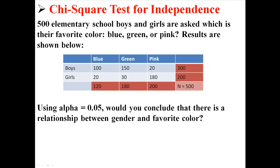So take this example. 500 elementary school boys and girls are asked which is their favorite color? Blue, green, or pink? And below it we have the results. Now using an alpha level of .05, what do you conclude that there is a relationship between gender and favorite color?